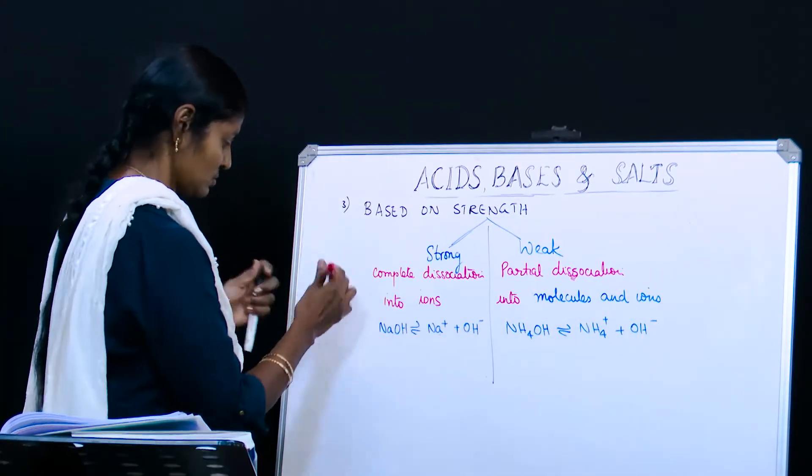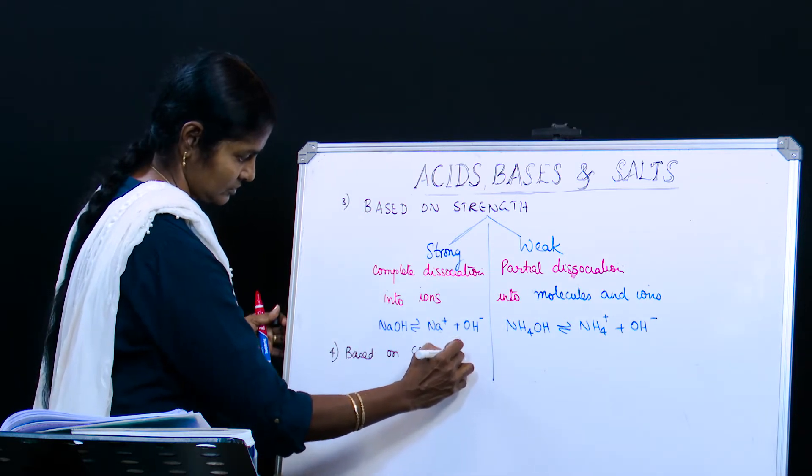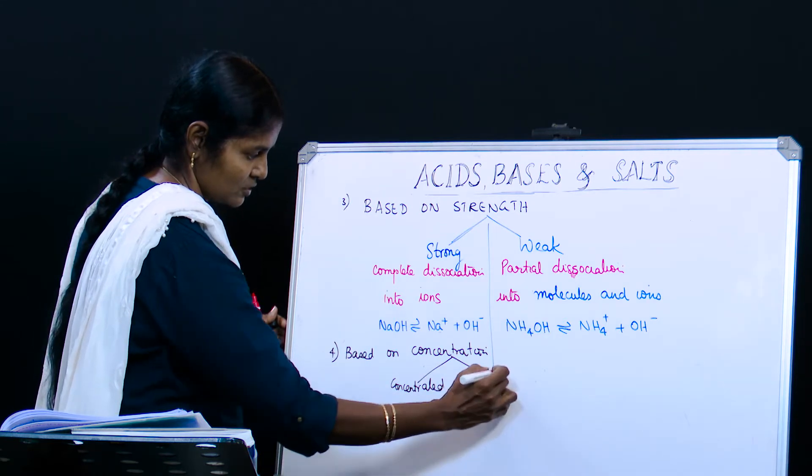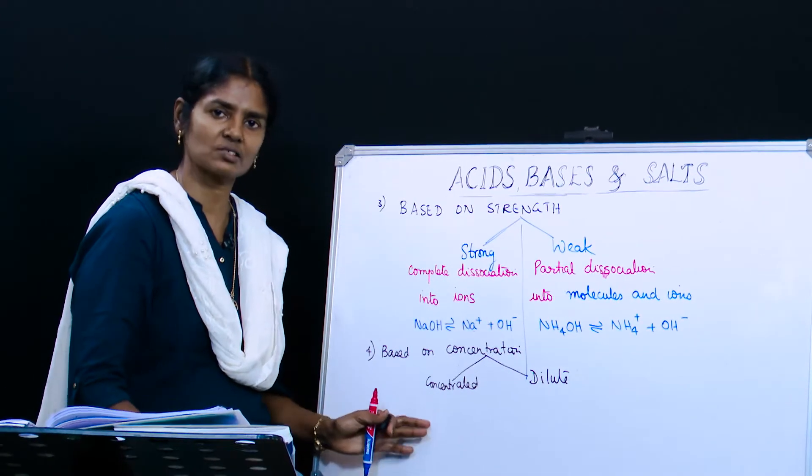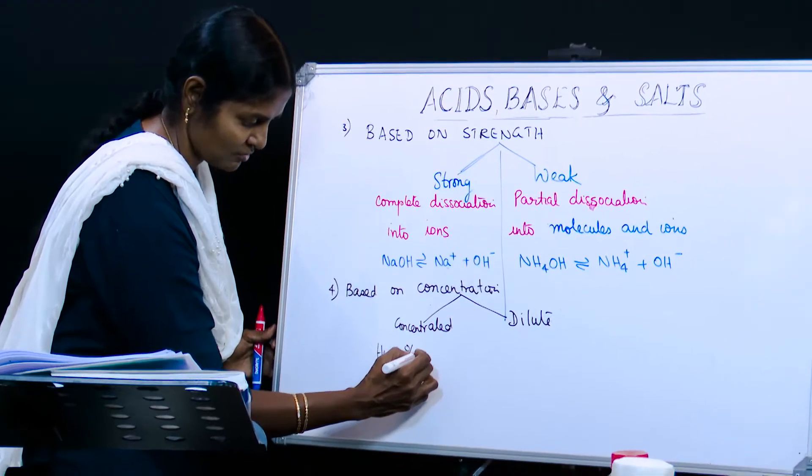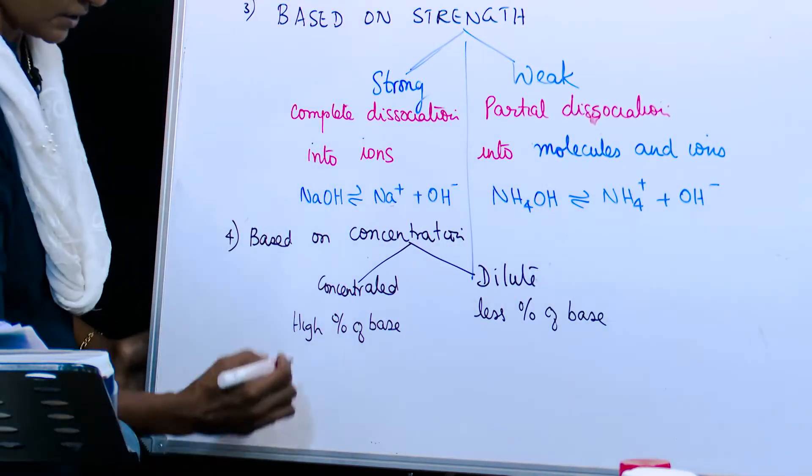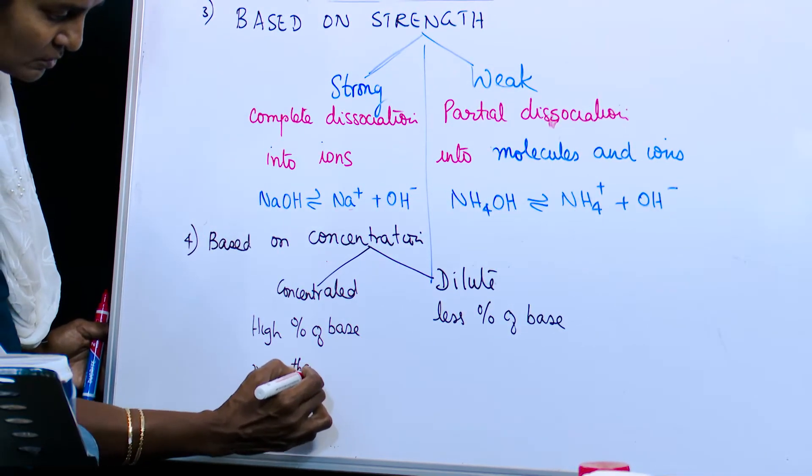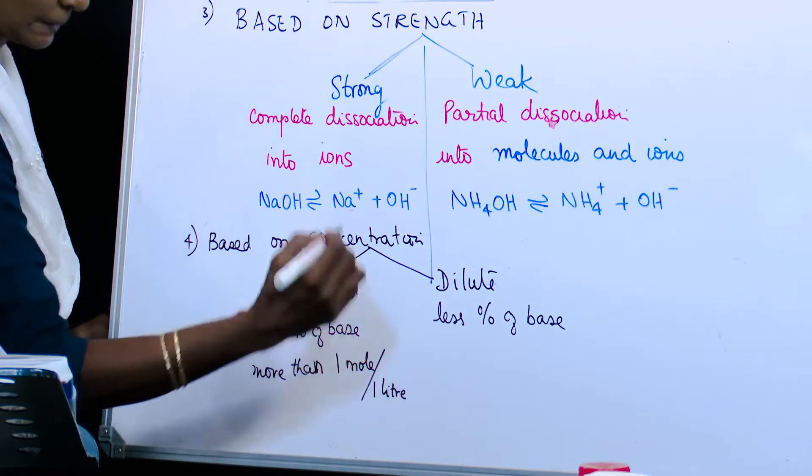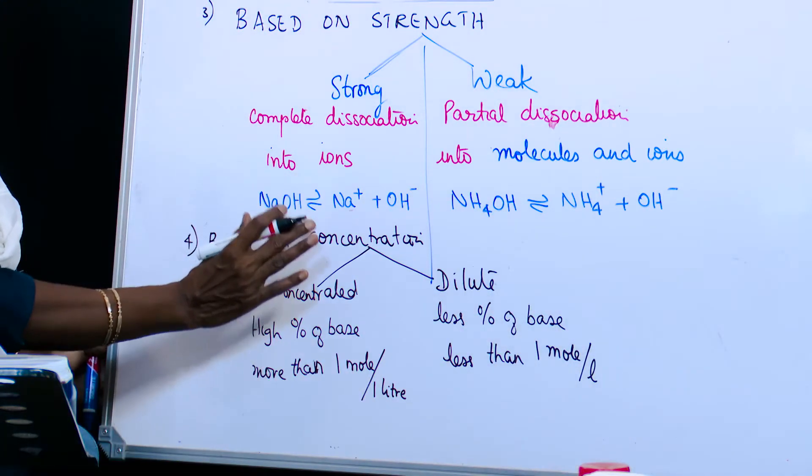Then we move on to the next classification based on concentration. This again is of two types: concentrated and dilute. As we saw earlier, the same thing stands good - more of base and less amount of water means high percentage of base in concentrated. This will be more than one mole of base in one liter of water. Dilute would be less than one mole per liter.